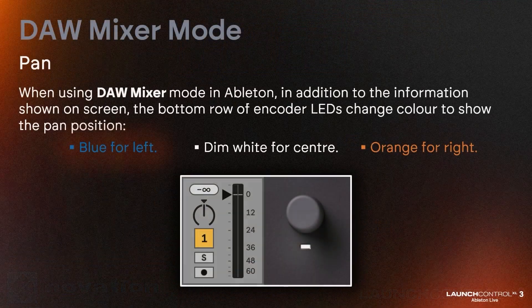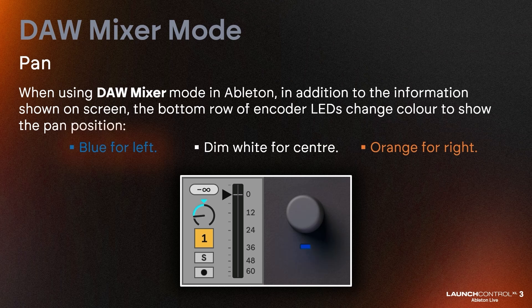When using DAW Mixer mode in Ableton, in addition to the information shown on screen, the bottom row of encoder LEDs change colour to show the pan position: blue for left, dim white for centre, or orange for right.